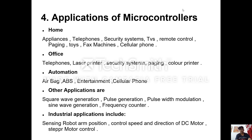Applications of microcontroller: in the home, it is used in telephones, security systems, TVs, remote controls, paging, toys, fax machines, and cellular phones. In the office, it is used in telephones, laser printers, security systems, paging, and color printers. In the automation field, it is used in airbags, ABS, entertainment, and cellular phones. Other applications include square wave generation, pulse generation, pulse width modulation, sine wave generation, and frequency counter. Industrial applications include sensing robot arm position, controlling speed and direction of DC motors, and stepper motor control.